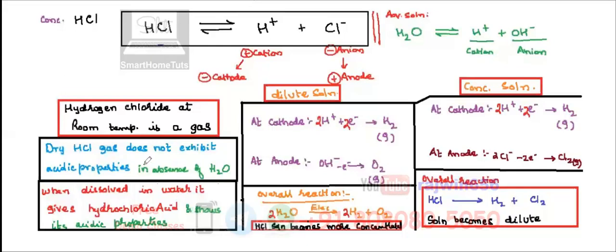We have already done electrolysis of brine, that is electrolysis of sodium chloride. On similar grounds, we are doing electrolysis of HCl. Brine was concentrated sodium chloride, that is concentrated NaCl. Here we are going to look into different aspects of electrolysis of HCl.